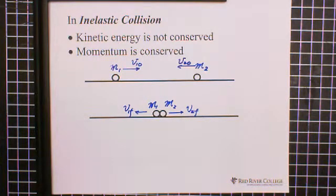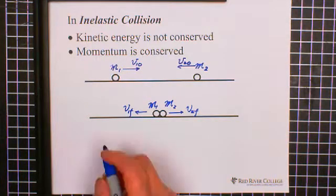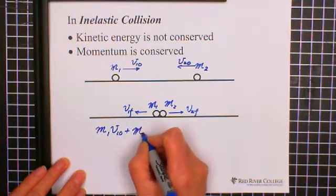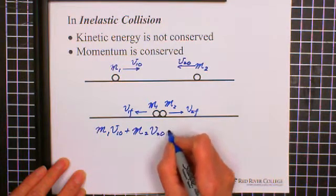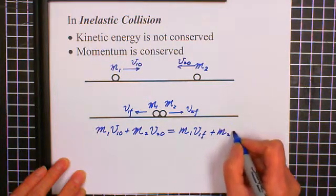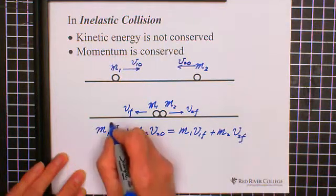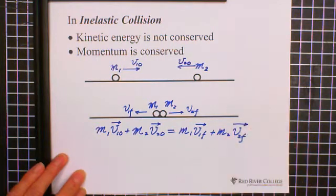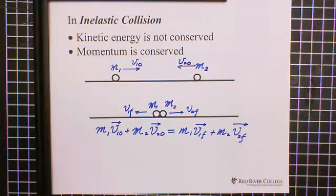Because kinetic energy is not conserved, we cannot use conservation of kinetic energy, but we still can write the conservation of momentum: M1 V1 initial plus M2 V2 initial equals M1 V1 final plus M2 V2 final (all quantities are vectors). So we only have one equation, meaning we can only solve for one unknown.